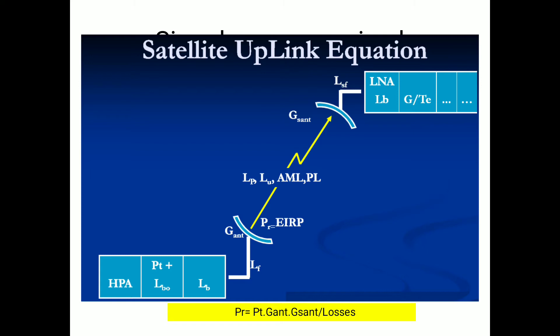Now let's derive the expression for received power. This slide shows a total satellite communication uplink — from Earth station to satellite. The transmitted power PT experiences free space losses, polarization losses, and other losses. The transmitting antenna has gain G_antenna and the receiving antenna has gain G_s. The received power P_r = PT · G_antenna · G_s / losses. These losses include free space losses, atmospheric absorption, antenna misalignment, polarization, and feeder losses.